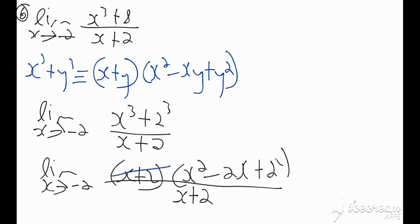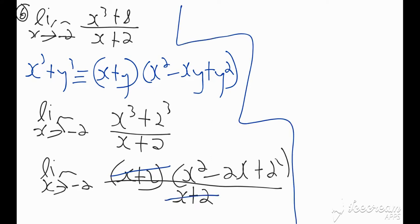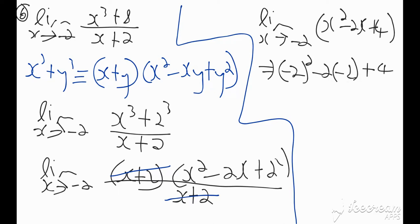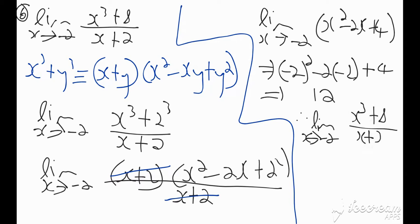So clearly we can reduce here — the (x plus 2) in the numerator cancels with (x plus 2) in the denominator. This leaves me with the limit as x tends towards minus 2 of x squared minus 2x plus 4. Now we can make our direct substitution: negative 2 squared minus 2 times negative 2 plus 4, which gives us 12. So the limit of x cubed plus 8 over x plus 2 as x tends towards minus 2 is equal to 12.